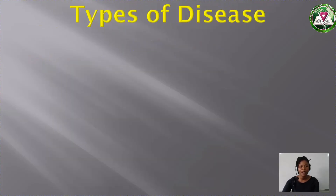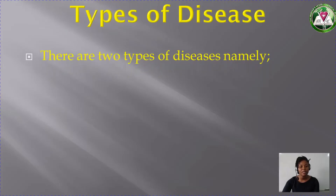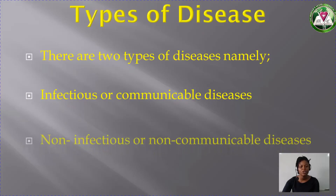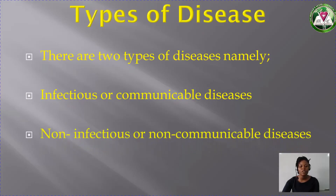Now we have two major types of diseases. We have a lot of diseases but we group them into two types. One is infectious or communicable diseases. Number two, non-infectious or non-communicable diseases.